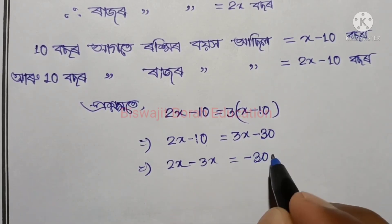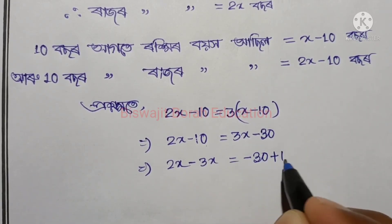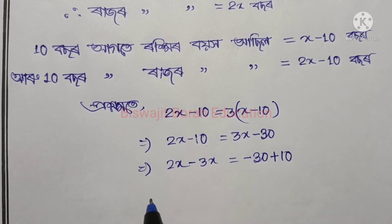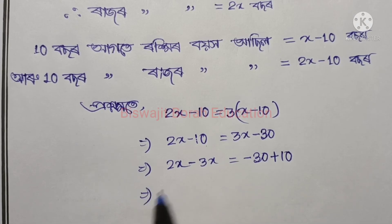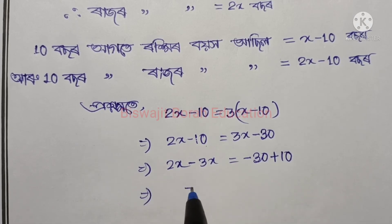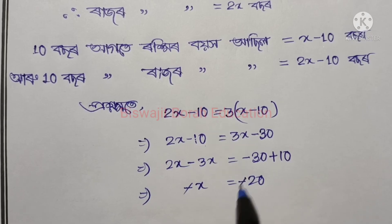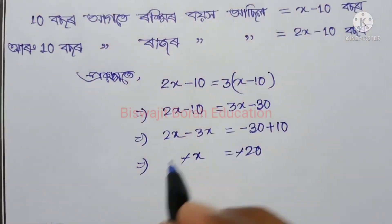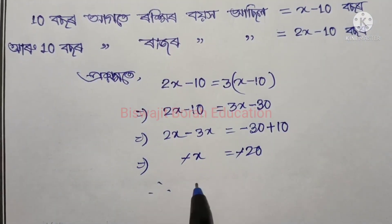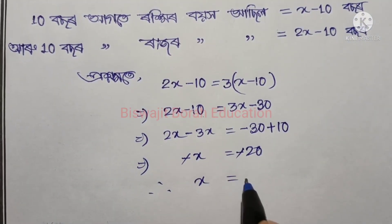Plus 10 — no hai? So minus x equals minus 20. Minus minus cancel. So x equals 20.